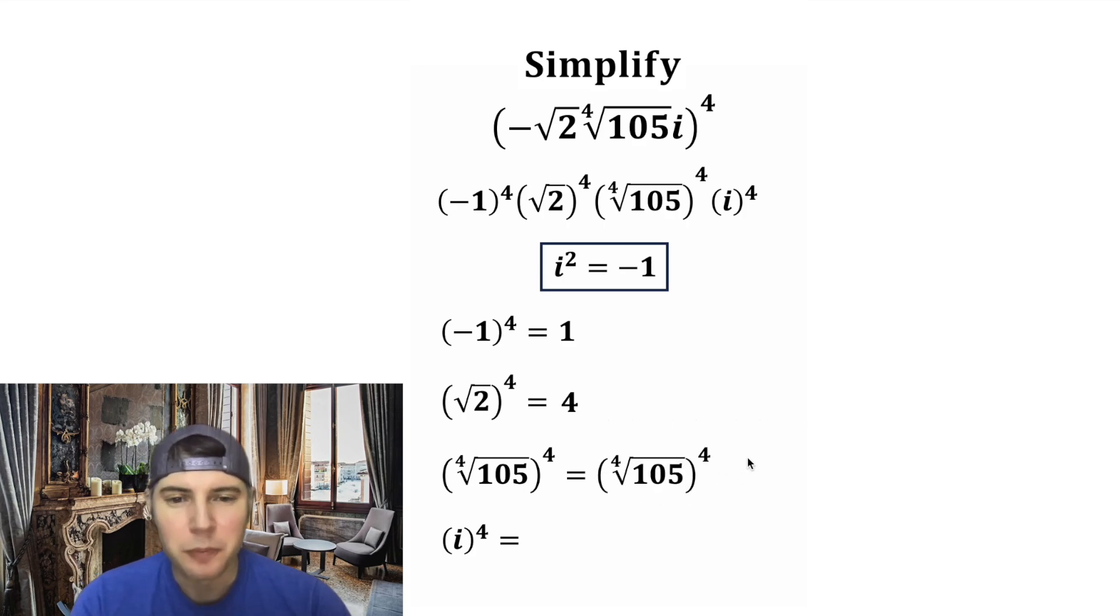And then the fourth root of 105 to the fourth power, this fourth root and fourth power will cancel each other out, and we're just left with 105.